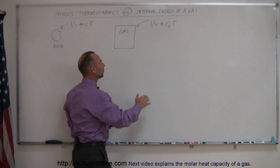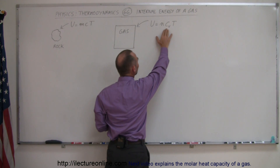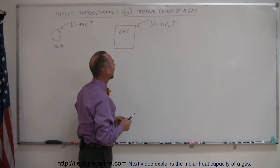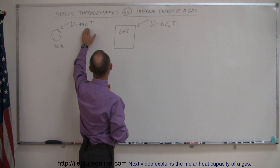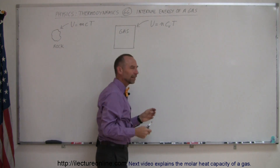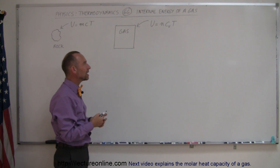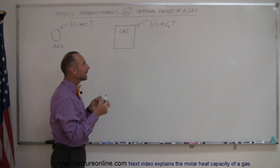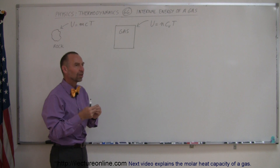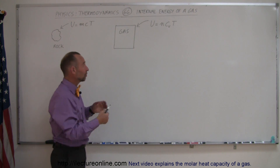In the very same way we can talk about the internal energy of a gas, which is determined by how many moles of the gas we have, the molar heat capacity of the gas, and the temperature of the gas. So instead of mass in kilograms we talk about moles, and instead of the specific heat of the rock we talk about the molar heat capacity. Notice the letter v there — C sub v is the molar specific heat of the gas when the volume doesn't change.